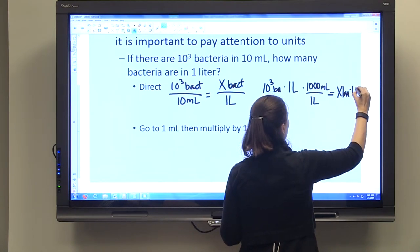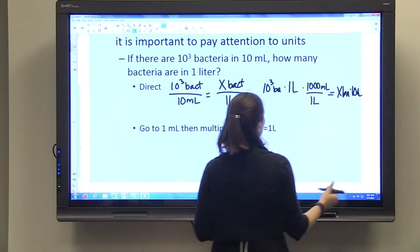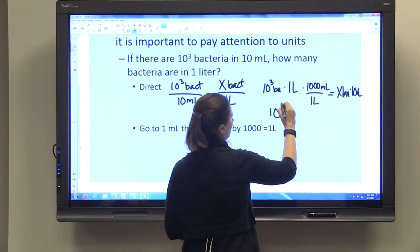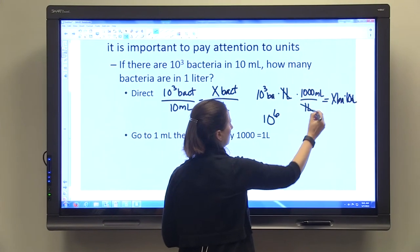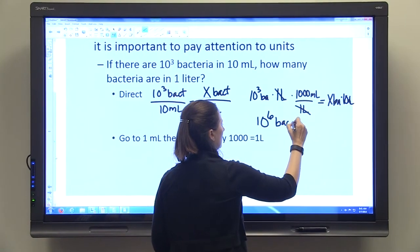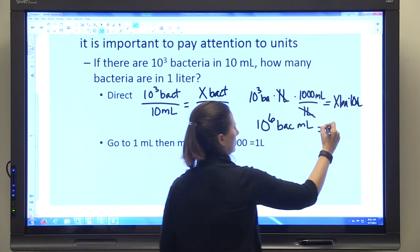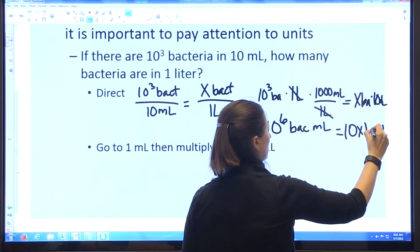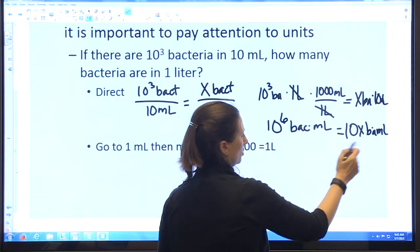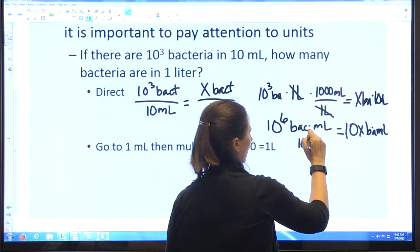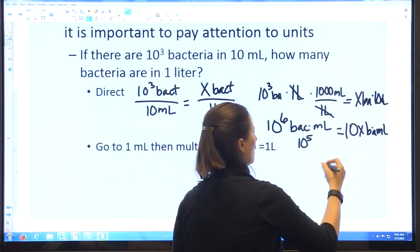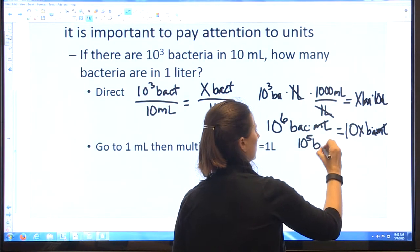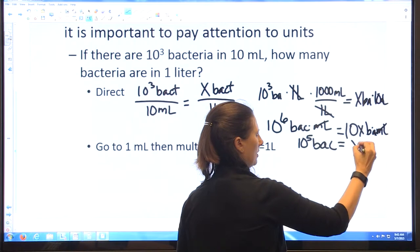If you multiply this out, you'll get 10³ times 1000 mL equals 10X bacteria mL. The liters cancel. You'll divide by 10, so the mL will cancel and you'll get 10⁵ bacteria equals X.